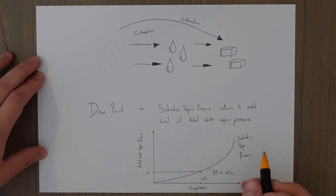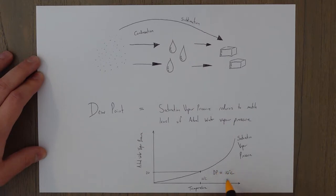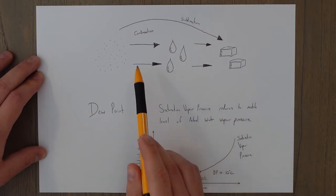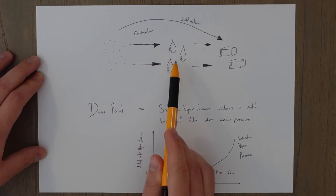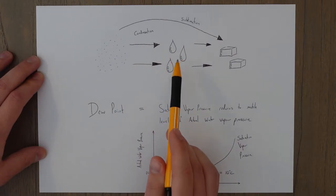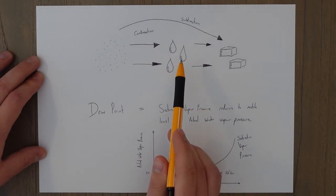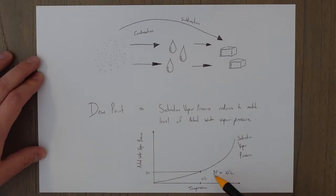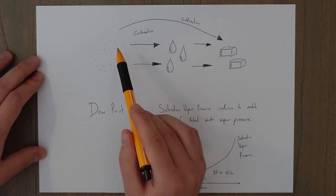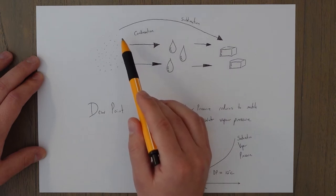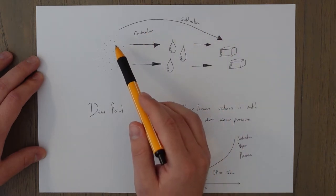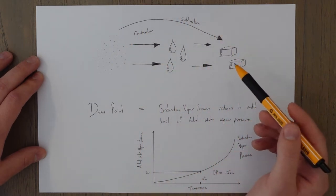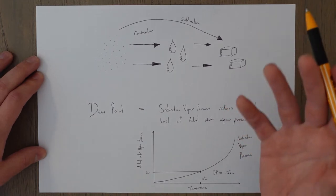When the dew point temperature is above zero degrees Celsius — in this example we've chosen 10 degrees Celsius — we would form liquid water molecules in the air. If the dew point was below zero degrees Celsius then we would go through the sublimation process straight into the solid water state in ice form.